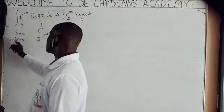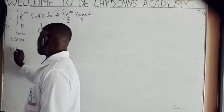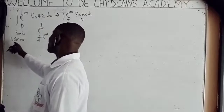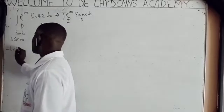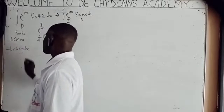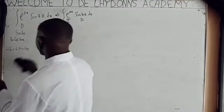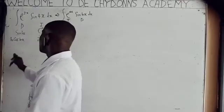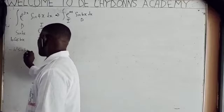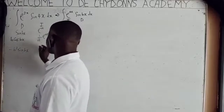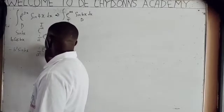So when you differentiate cosine bx, you write b. If you differentiate bx, another b is what you will get. Then the differential of cosine gives you minus sine bx. So you will be getting b times b, which gives you b squared. We say minus b squared sine bx. Then the corresponding integral is 1 over a squared exponential ax.